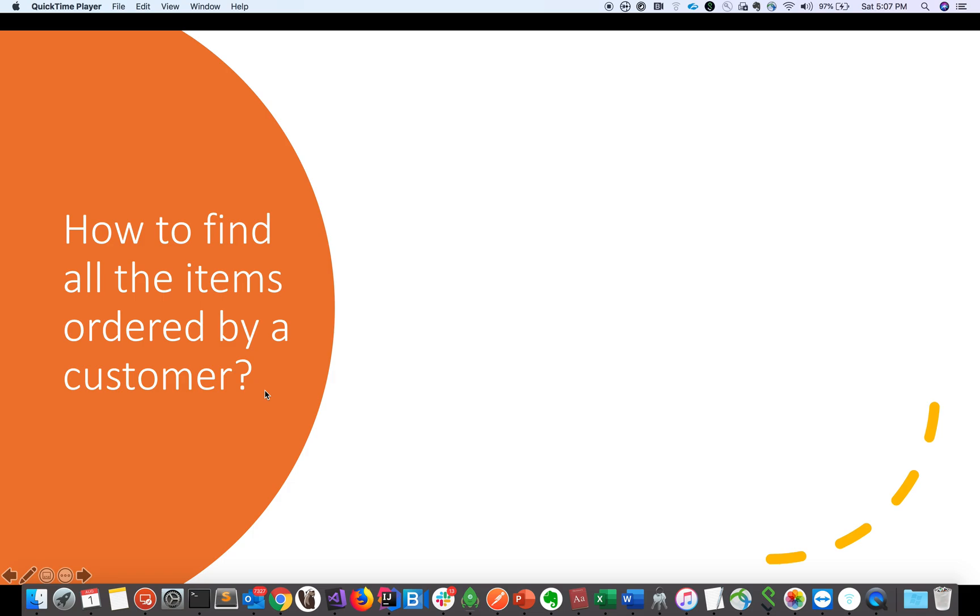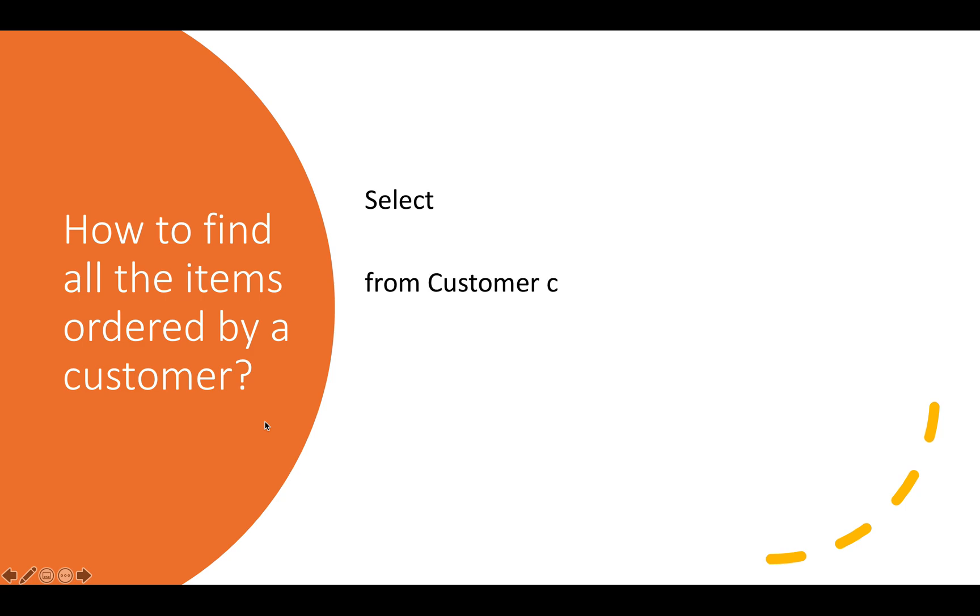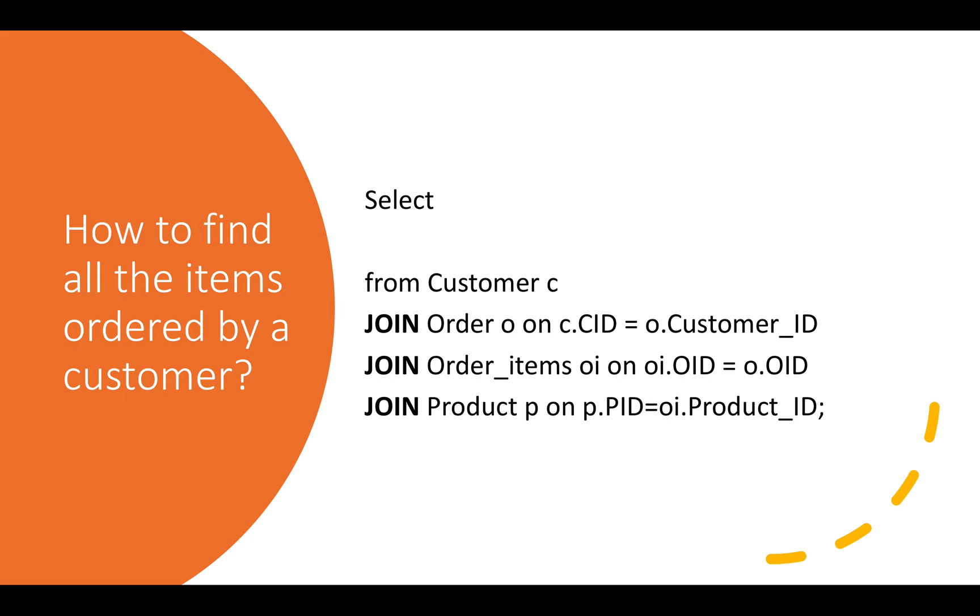Let us take an example where we have to find out all the items ordered by a customer. We'll select the data which is needed to us and we'll join customer table with order table, order table with order items table and order item table with product table to find out the product name and quantity. That's how a query in relational looks like.